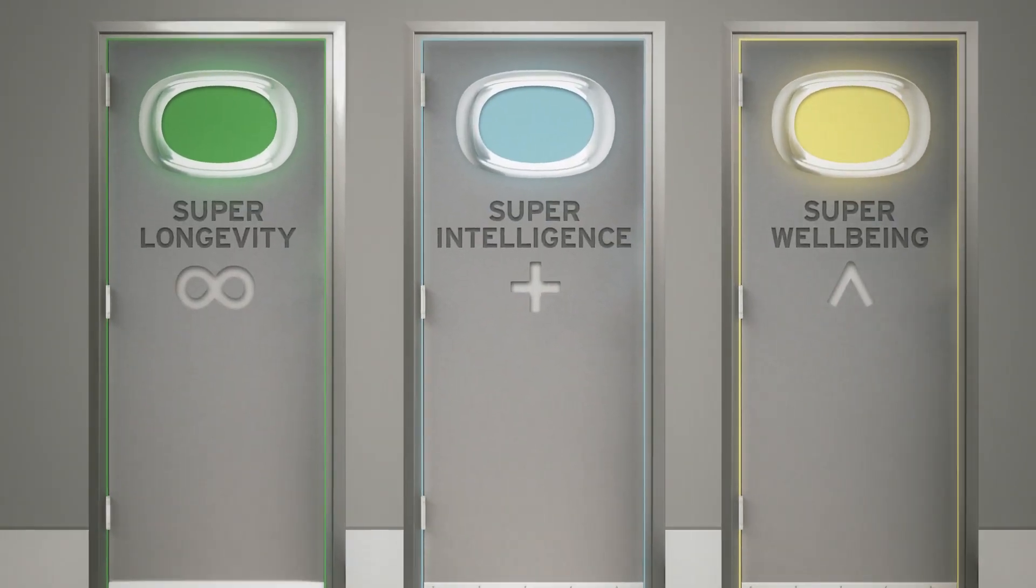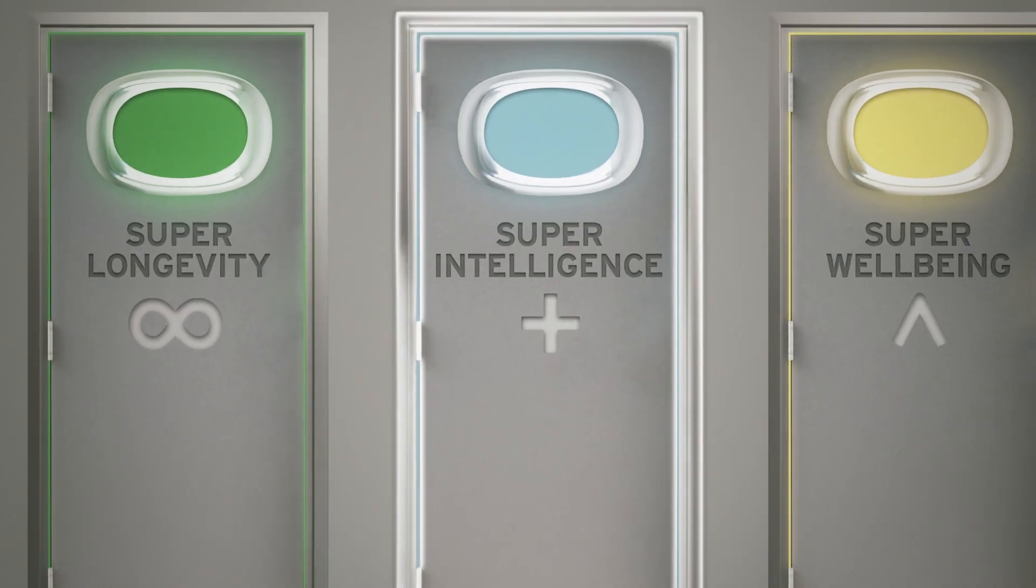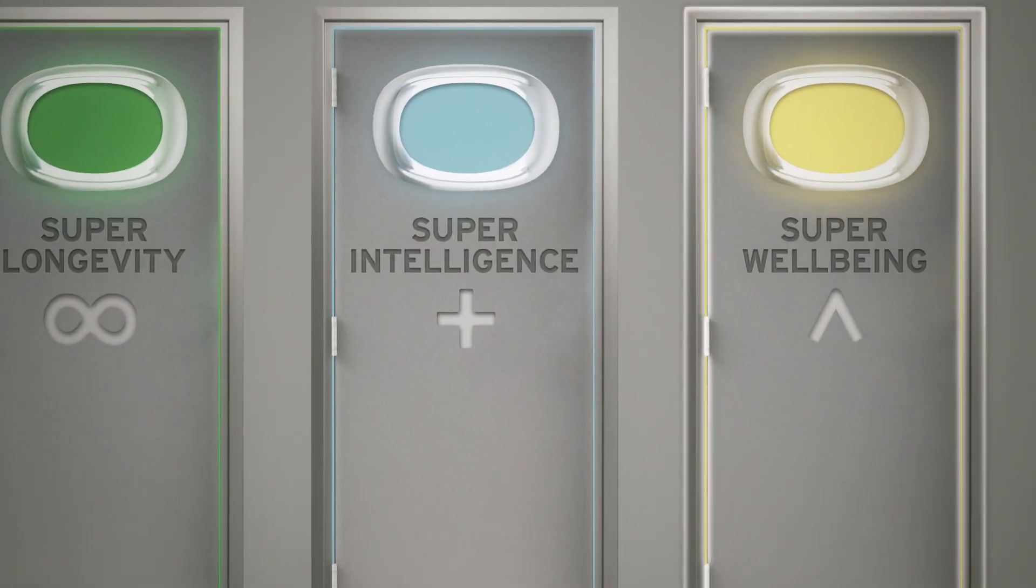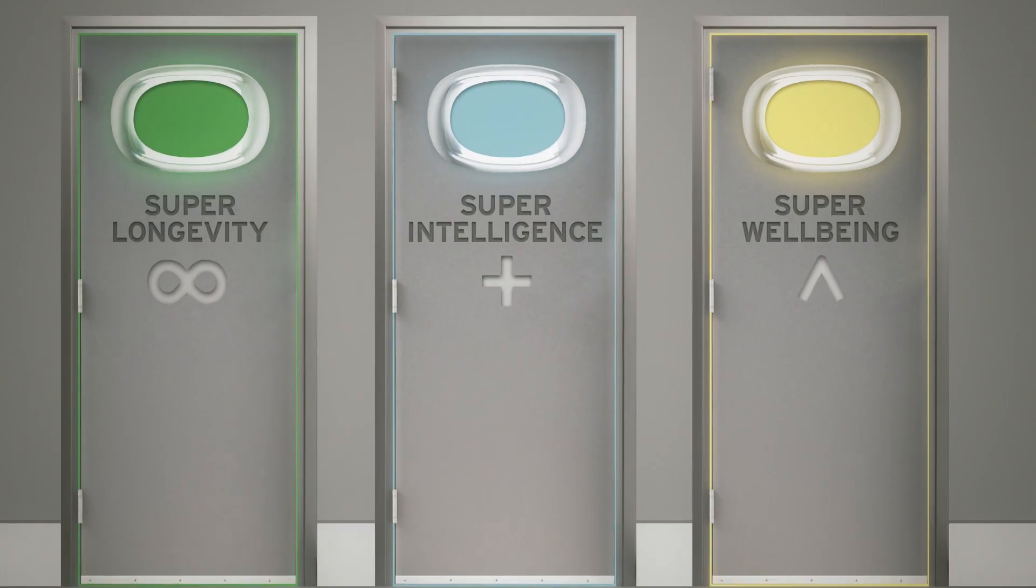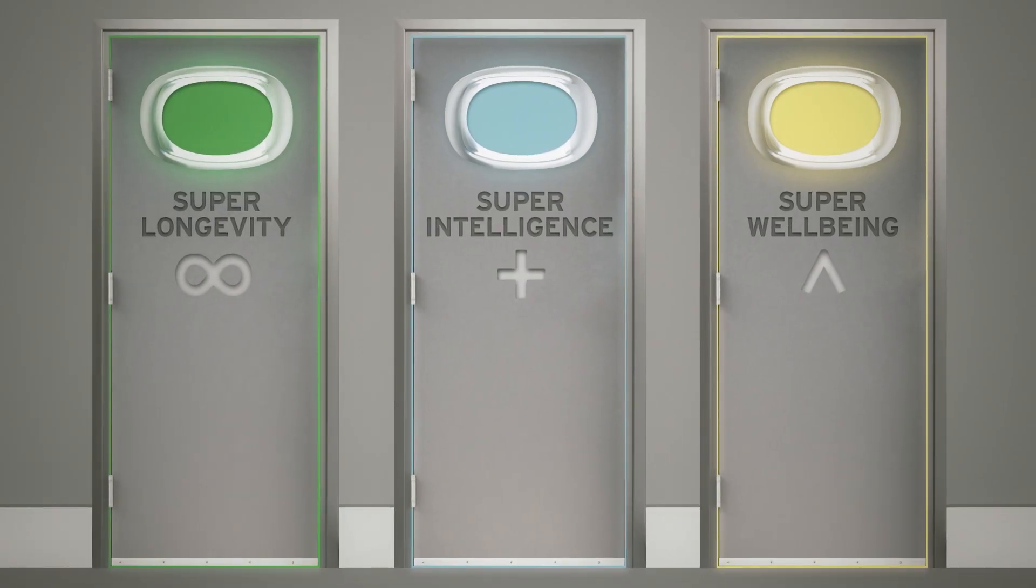We'll examine three central areas of transhumanist thought. Super longevity, super intelligence, and super wellbeing. Dubbed the three supers because of their extraordinary transformative potential.